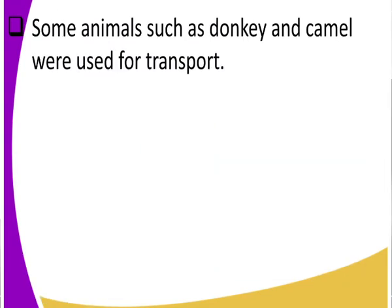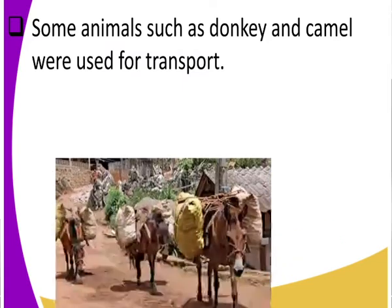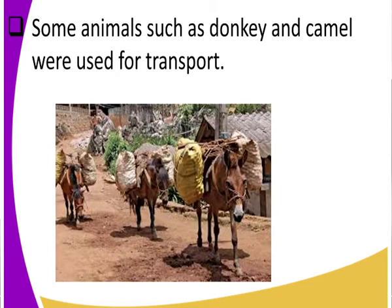Let us also look at some of those animals — for example, the donkey and camel. These are pack animals. The donkey and camel were used as a form of transport — they could be used in carrying goods and carrying people. In the first image there is a donkey carrying goods, used in transport.